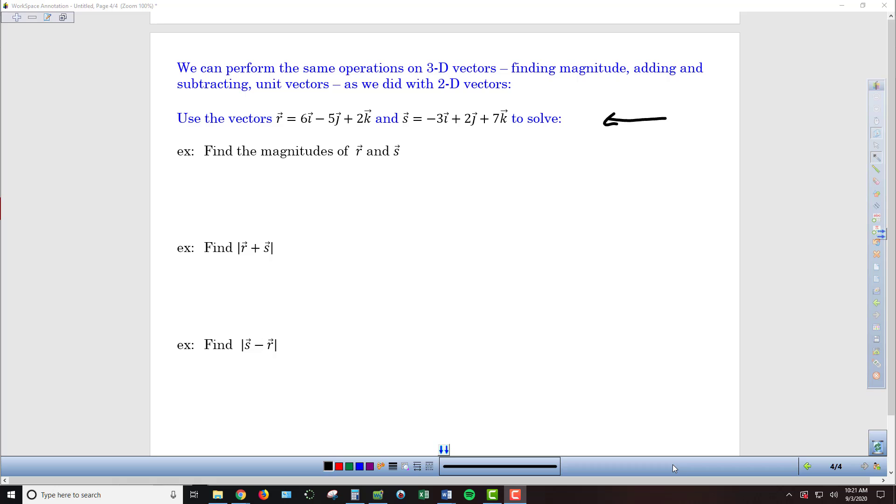So in the case of R, if we want to find what the magnitude of R is, we're going to take the components 6 squared plus negative 5 squared plus 2 squared and take the square root of that. So we've got 36 plus 25 plus 4. We're looking at the square root of 65 when we add those together.